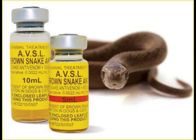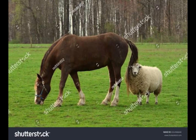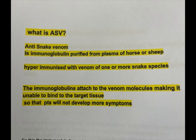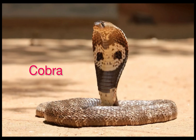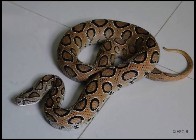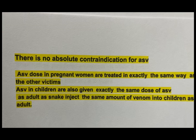What is ASV? Anti-snake venom is immunoglobulin purified from plasma of horses or sheep hyper-immunized with venoms of one or more snake species. The immunoglobulin attaches to the venom molecules, making them unable to bind to target tissue. Indian ASV is polyvalent, raised against venoms of four species: spectacled cobra, common krait, Russell's viper, and saw-scaled viper. There is no absolute contraindication for ASV.